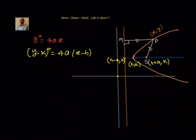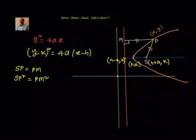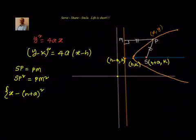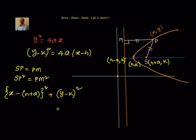We can write SP = PM, and squaring both sides, SP² = PM². Now SP² is nothing but (x − (h + a))² + (y − k)².